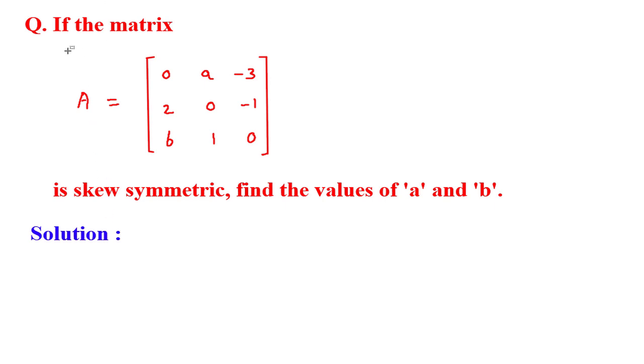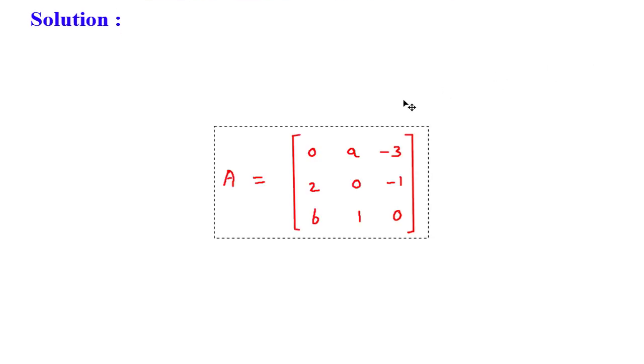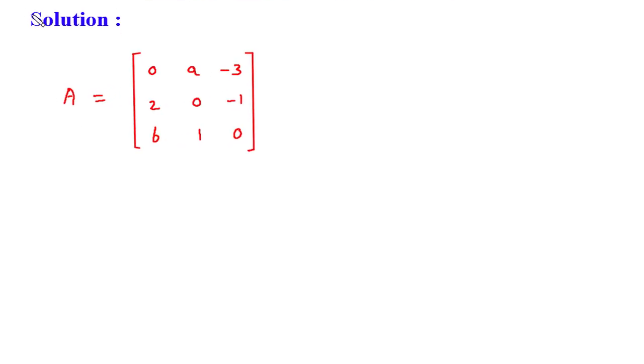First we will rewrite this matrix as it is. Now as we know that this is a skew symmetric matrix, in case of skew symmetric matrix A is equal to minus A transpose.